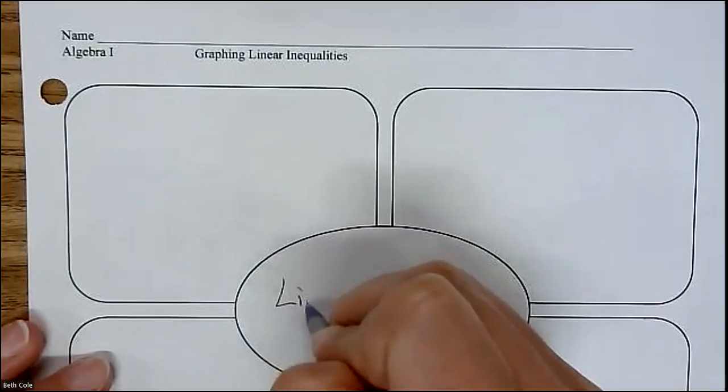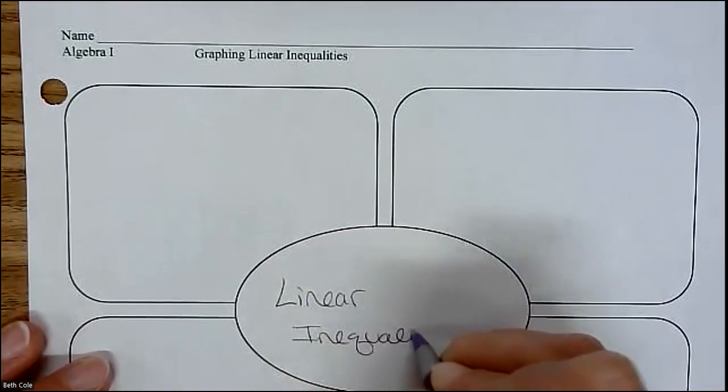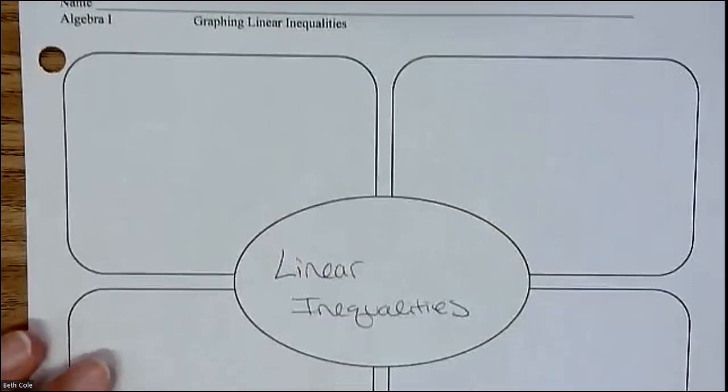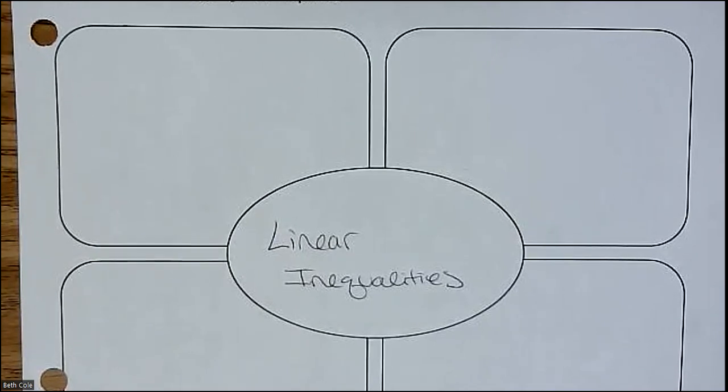So what we're going to look at today are linear inequalities, which is exactly the same as an equation, except instead of an equal sign, we're going to have one of those other symbols. What are the other symbols you can have besides an equal sign? Greater than, less than, greater than or equal to, less than or equal to.